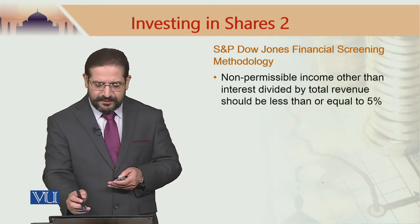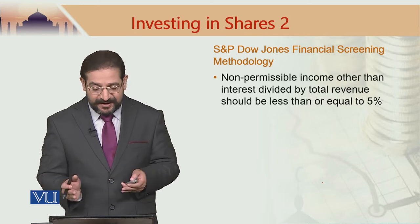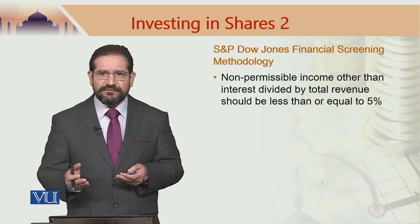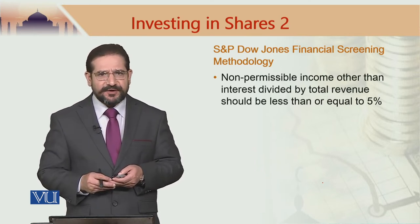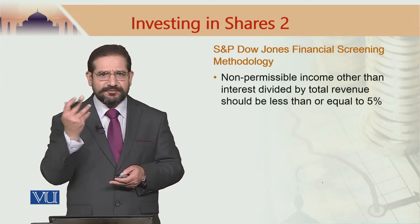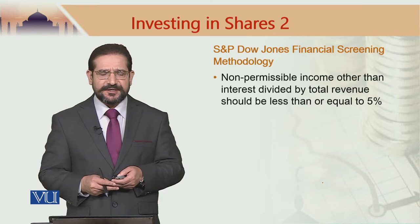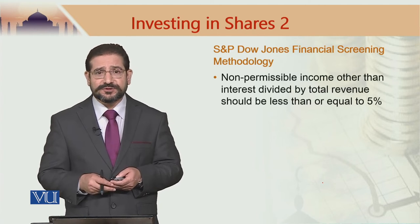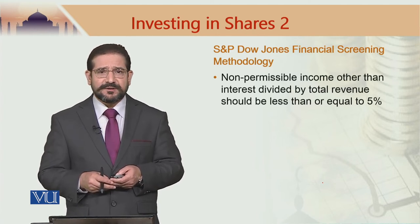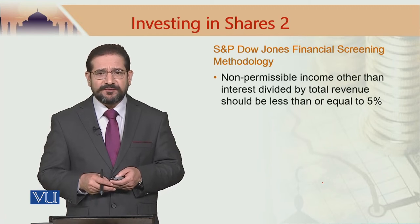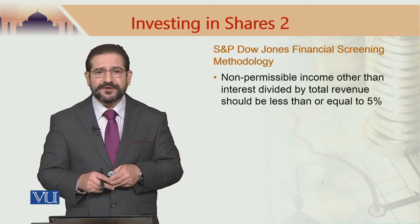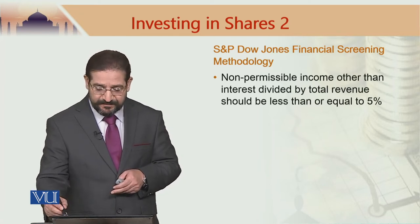When it comes to income, non-permissible income other than interest divided by total revenue should be less than or equal to 5%. So if you find a company is listed on the stock exchange and it is a very good company from an investment viewpoint and fulfills all three screen criteria, however we find that the income generated by this company from non-halal sources is 20%, we would not deem this as a Sharia-compliant company. For a stock to be deemed Sharia-compliant, its non-permissible income should be less than 5% of the total. This is called the income screen.